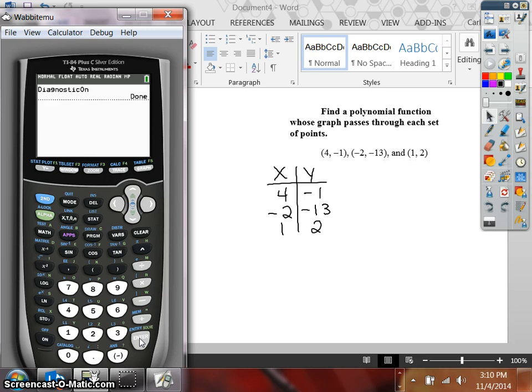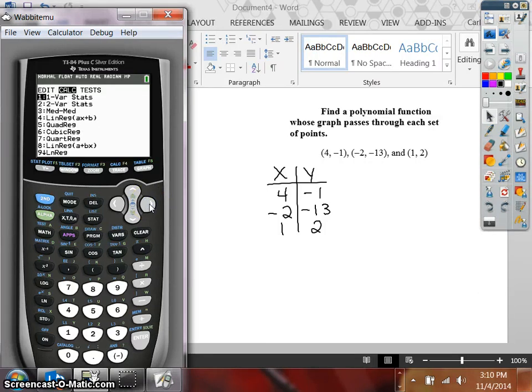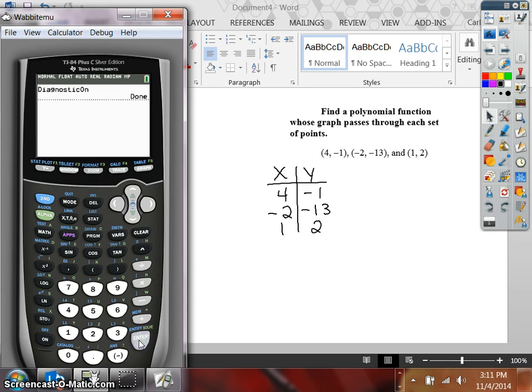Alright, so once we've got that turned on, we can go back to stat. It's saved the points in there. They're already in there. We looked at them on the graph. And now we're going to ask it to calculate an equation. So you've got lots of choices here. Number 4 is linear, 5 is quadratic, 6 cubic, 7 quartic, etc. So we decided it's not linear. So let's check 5 first and see if this would be a quadratic equation. Again, it's pulling from list 1 and list 2. So you're just going to hit enter.